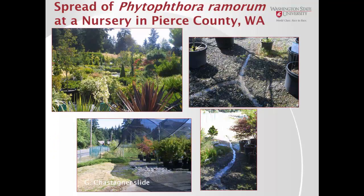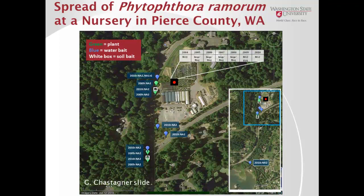I mentioned the problem of runoff contaminating waterways. These next slides from Gary Chastagner show a nursery in Washington state where Phytophthora ramorum contaminated the runoff water and then contaminated a nearby stream. An aerial view shows the locations where Phytophthora ramorum was detected in the stream via water baits. Imagine how difficult it would be to clean up a contaminated waterway — and think about those people downstream who might want to use this water for irrigation, which is unfortunately now contaminated with a quarantined pathogen.